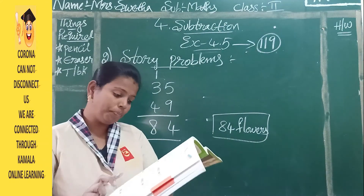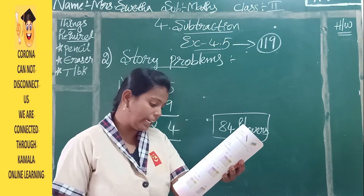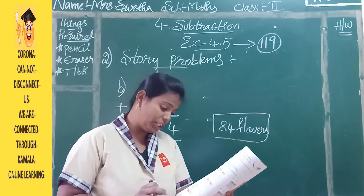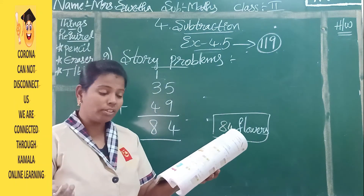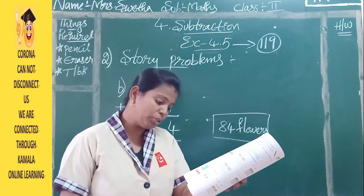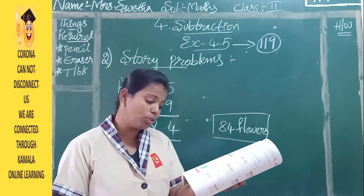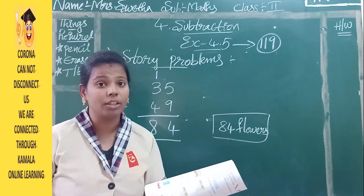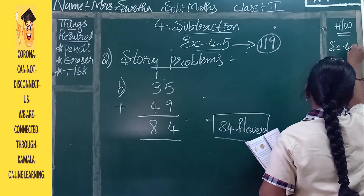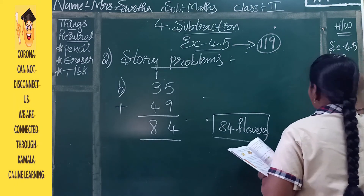Now see the third one. Raj has 87 books and Daurav has 39 books. How many more books does Daurav have? Here you have to do subtraction — 'how many more' also means left over, so subtraction. Next: Reena had 30 toffees on her way back from school. She bought 29 more. How many toffees does she have now? Here few are there and few are added again, so you do addition.